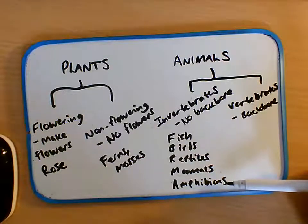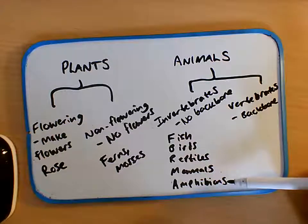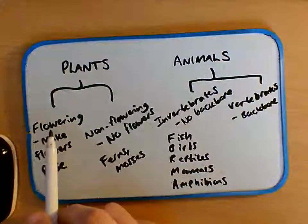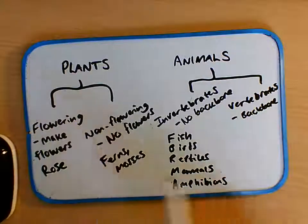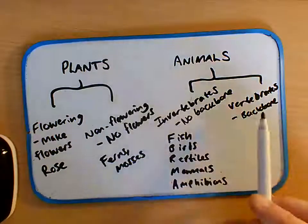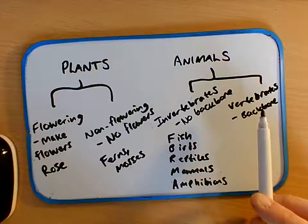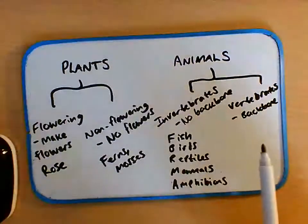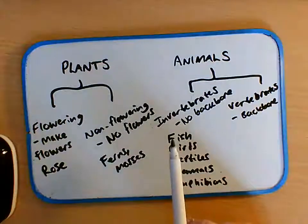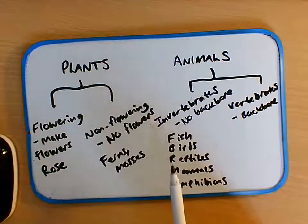So we've got two main groups of plants: the flowering and non-flowering. We've got two big groups of animals: the invertebrates and the vertebrates. Invertebrates being things like bugs and insects, and the vertebrates are split into five groups: the fish, the birds, the reptiles, the mammals, and the amphibians.